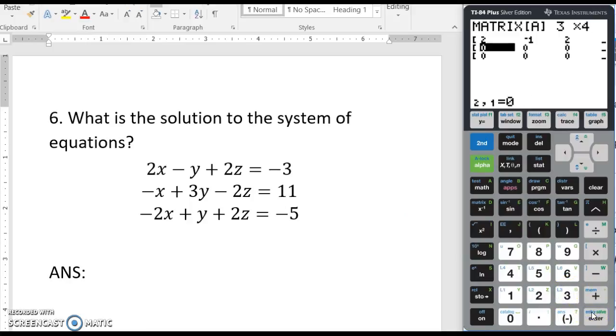It goes immediately down to the next one, so we have negative 1, 3, negative 2, and then 11.